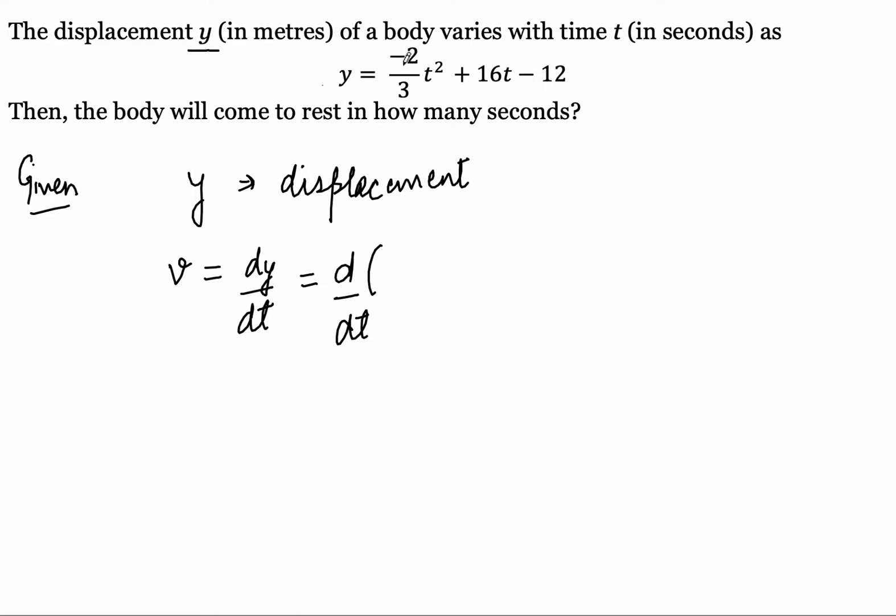Now minus 2 by 3 t squared plus 16t minus 12. Okay, so let's differentiate it. First of all, minus 2 upon 3, it is a constant so it will come out, and we are going to differentiate t squared. So I am going to write minus 2 upon 3 as it is, and the differentiation of t squared is 2 times t.